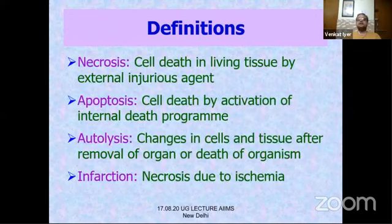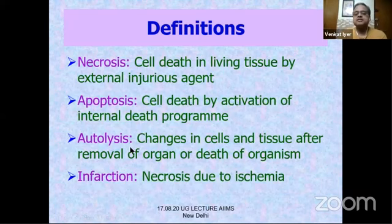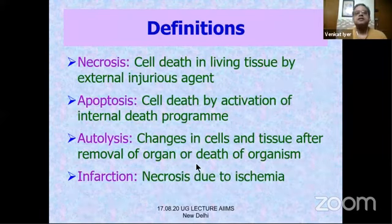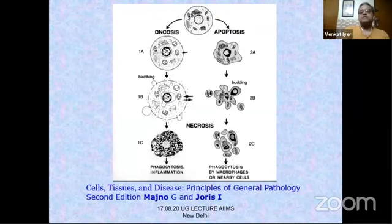Having understood the mechanisms underlying cell injury, we now look at what injured or dead cells look like. An irreversibly injured cell will die — cell death in living tissue is called necrosis. If there is endogenous activation of a program, that is apoptosis, covered in a subsequent lecture. Autolysis means changes in cells and tissue after removal of an organ or death of an organism — the release of lysosomal contents liquefies the unfixed tissue. An infarction is necrosis due to ischemia. Apoptosis is a cell condensation process, whereas cell injury causes a cell swelling process.